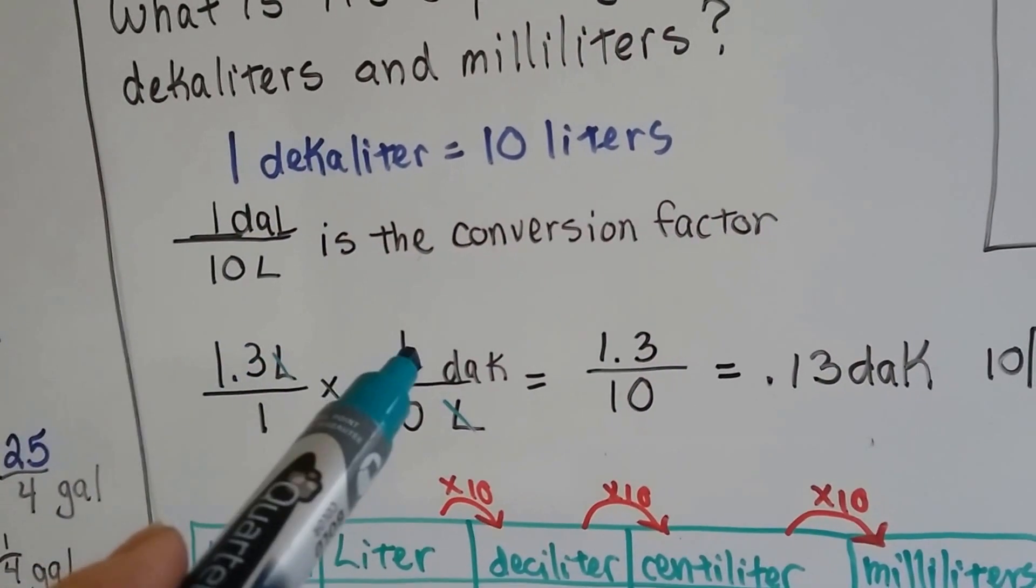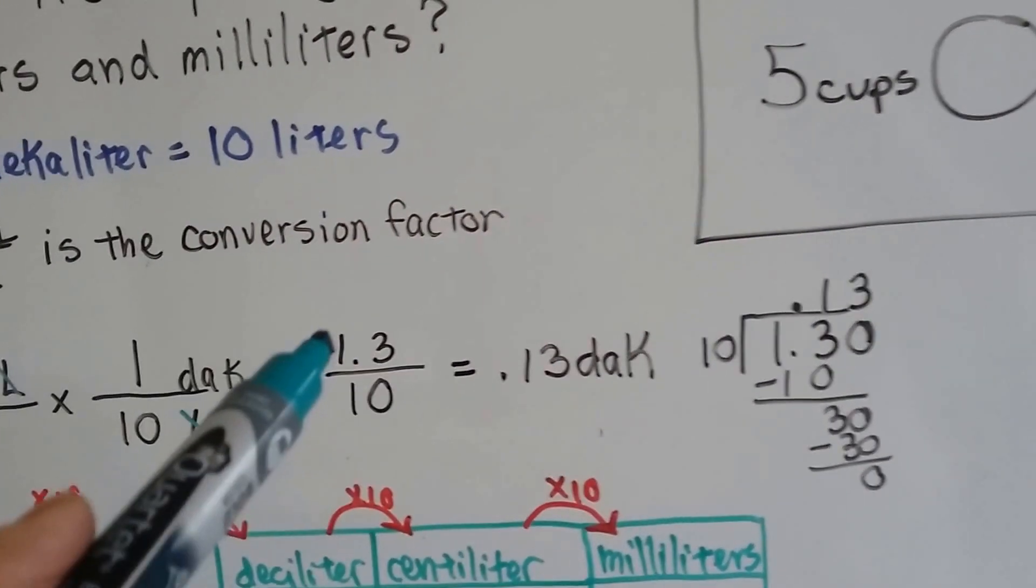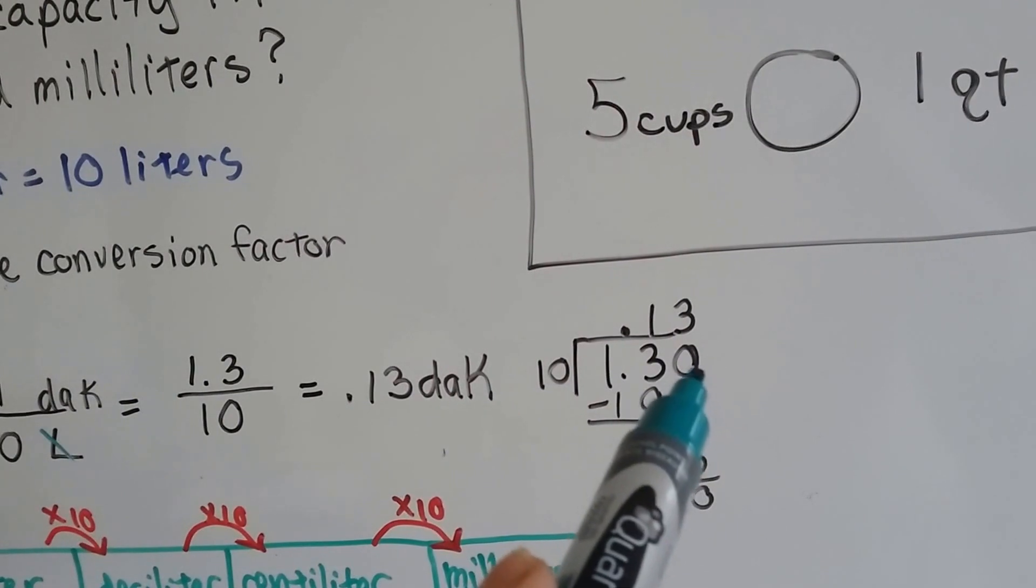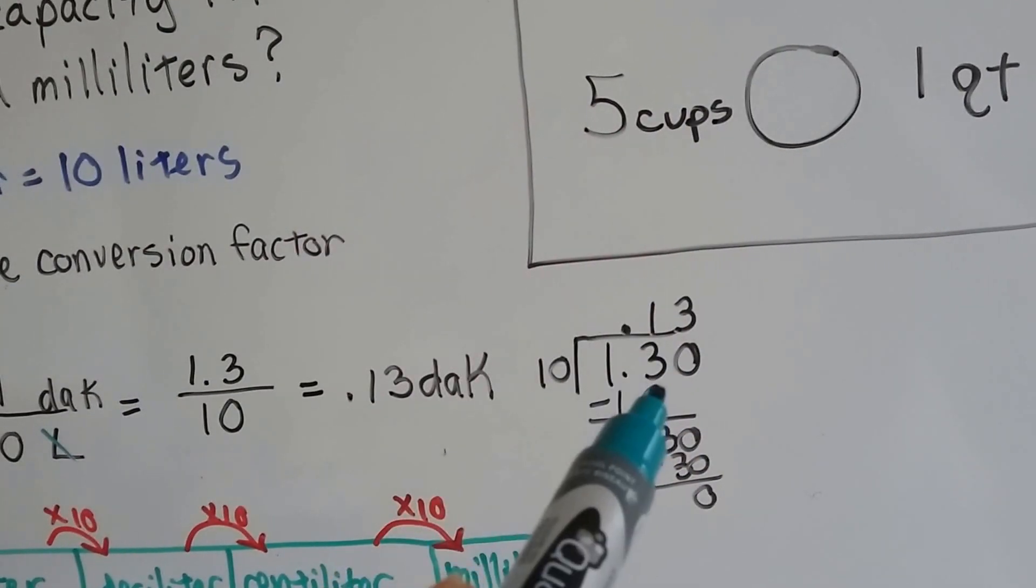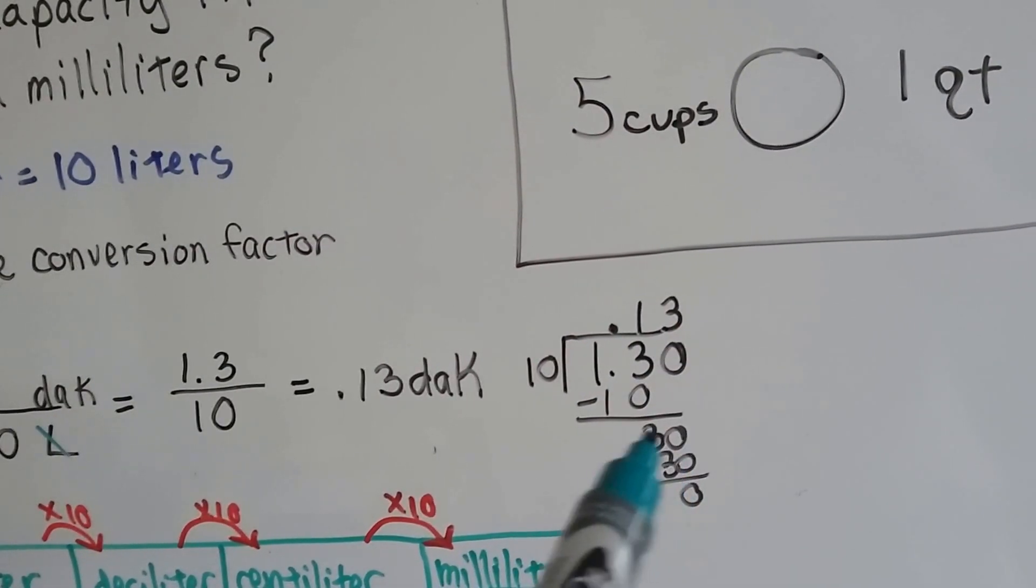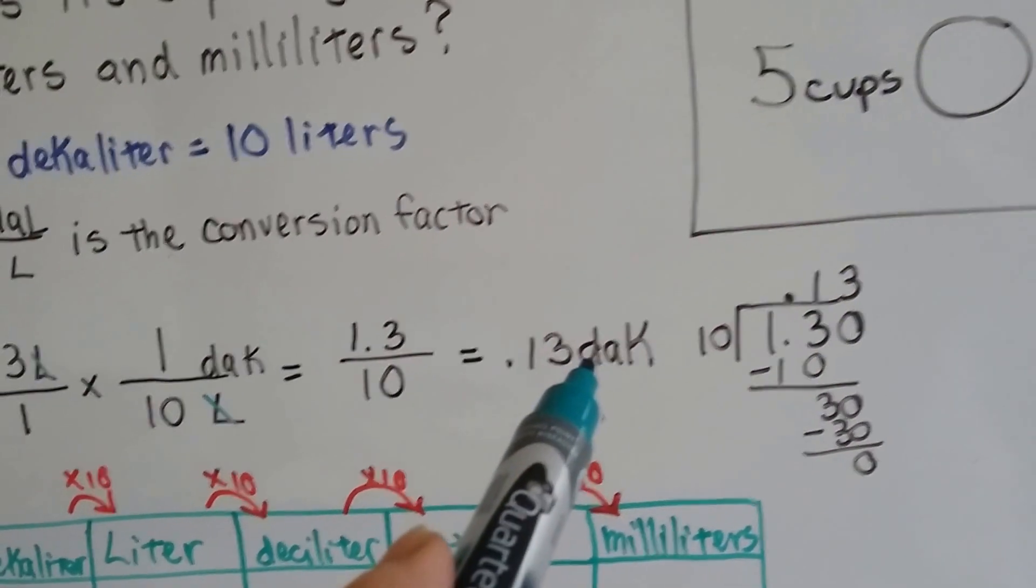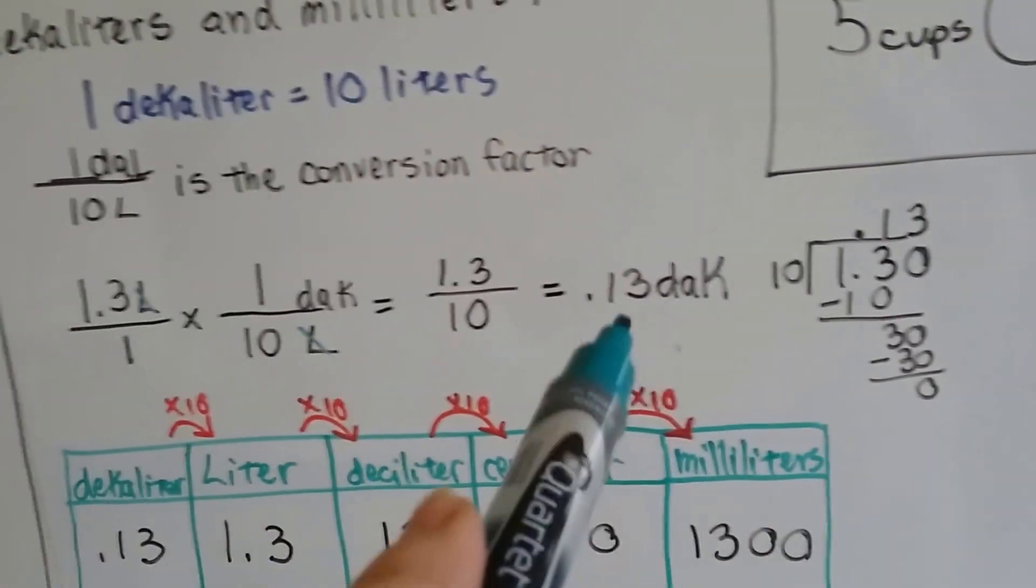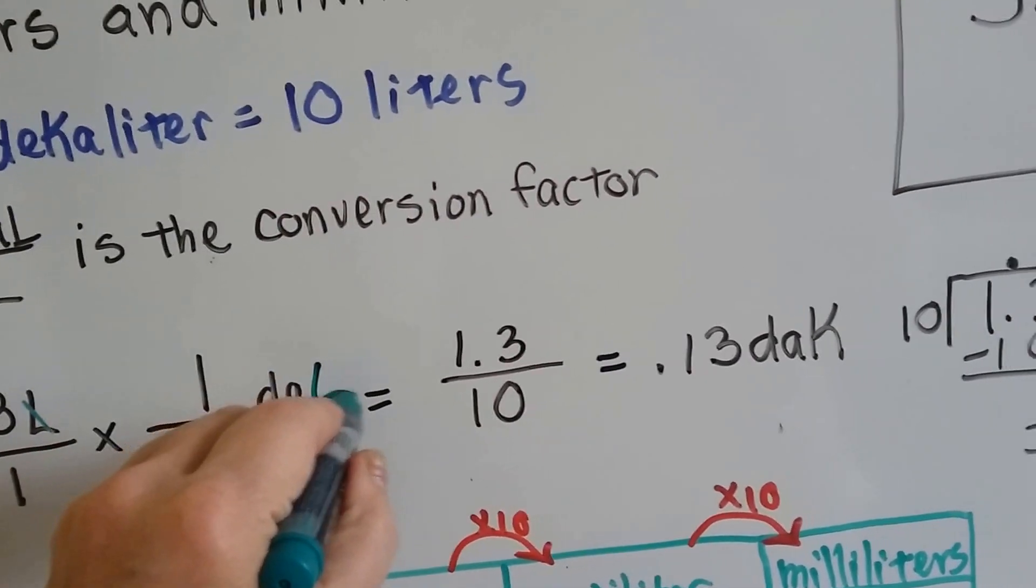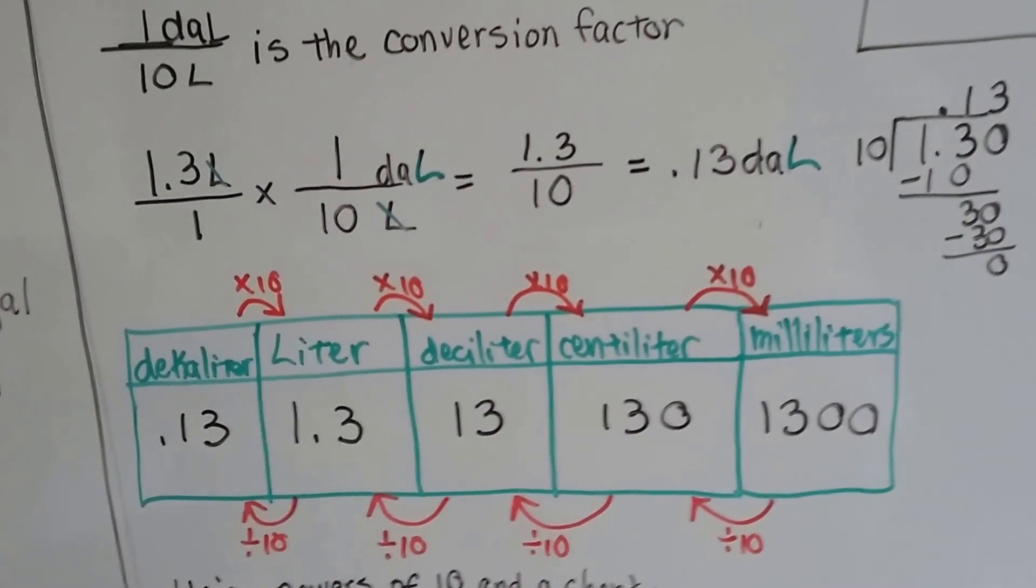We do our multiplication. 1.3 times 1 is 1.3, 1 times 10 is 10. Now we have a division problem: 1.3 divided by 10. I had to add an extra zero. 10 goes into 13 one time. We put our decimal point straight up. That's 10. We subtract, get a 3. I added a zero, that made 30. 10 goes into 30 three times. Our answer is 0.13 decaliters. In fact, I don't think this is the correct... yeah, it should be D-A-L. I'm sorry, I've got the wrong abbreviation there. For you metric people out there, you're going to get mad at me. I apologize.